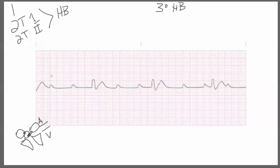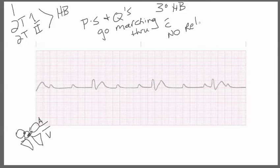Well with the third degree heart block, there's a couple of mnemonics they say: the P's and Q's go marching through with no relation between the two.